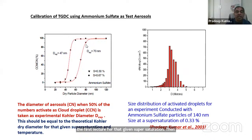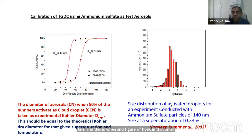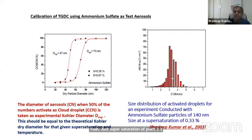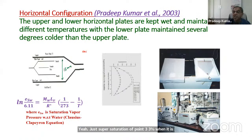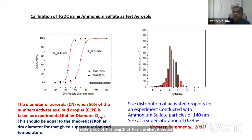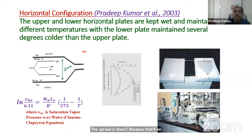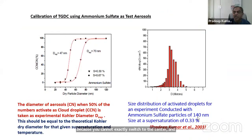This experimental Kohler diameter should equal the theoretical Kohler diameter for that given supersaturation, confirming the chamber is working correctly. In that small distance of 30 centimeters, with ammonium sulfate particles of 140 nanometers at a supersaturation of 0.33%, as they exit the chamber they would have activated as cloud droplets ranging from about 1 to 5 microns in diameter. The spread exists because you cannot squeeze particles exactly to the center, and there is also a slight spread in the size of the ammonium sulfate particles sent in.